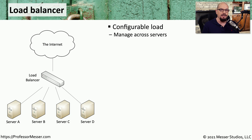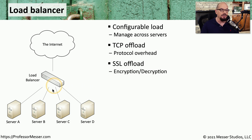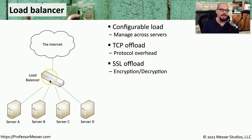The primary function of a load balancer is to balance the load, and you can configure it to manage that load across multiple servers. You can also set up the load balancer so that some of the TCP overhead is offloaded onto the load balancer rather than down to the individual server, keeping communication between the load balancer and the servers very efficient. This might also be used for SSL offloading — the encryption and decryption process for SSL or TLS uses additional CPU cycles, so the load balancer performs that SSL encryption and decryption in hardware, sending clear information down to the individual servers within the same data center.